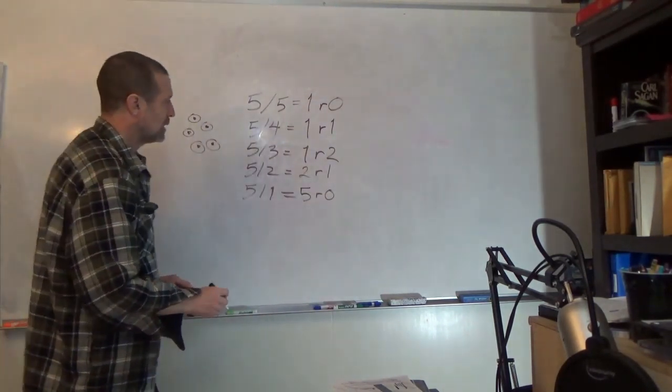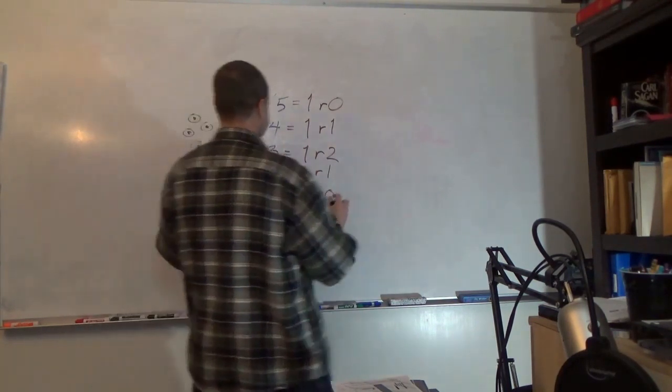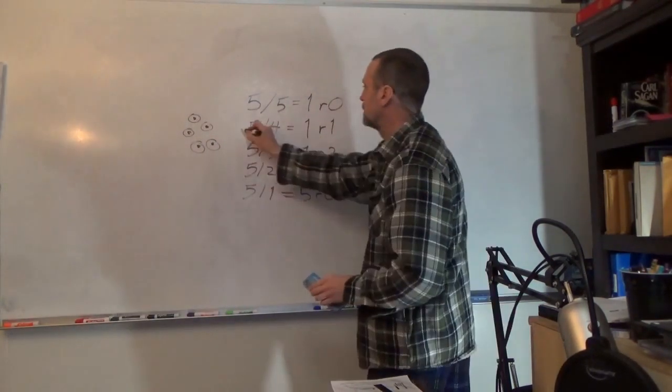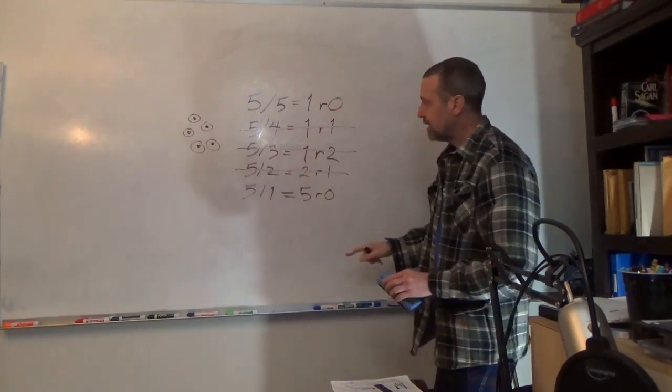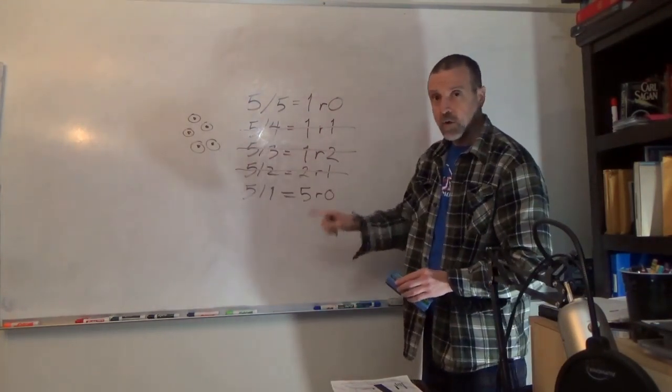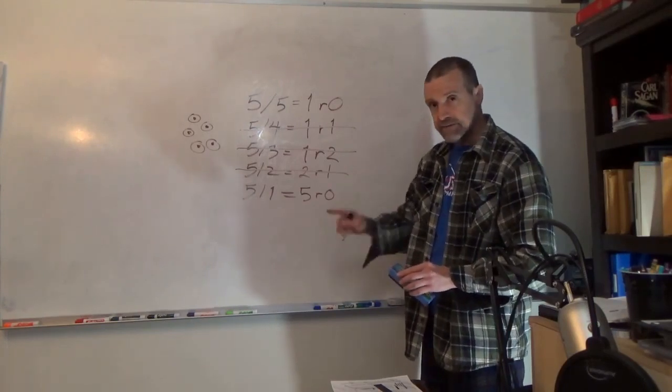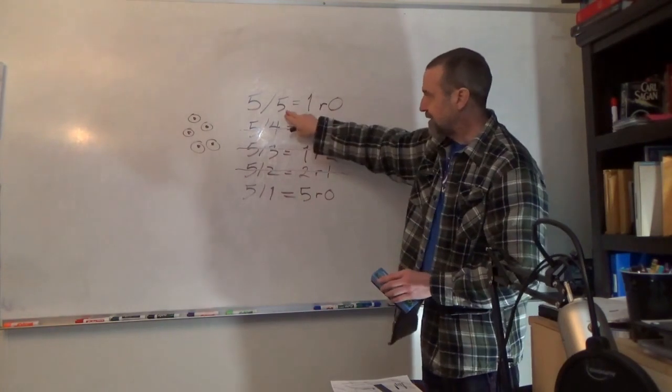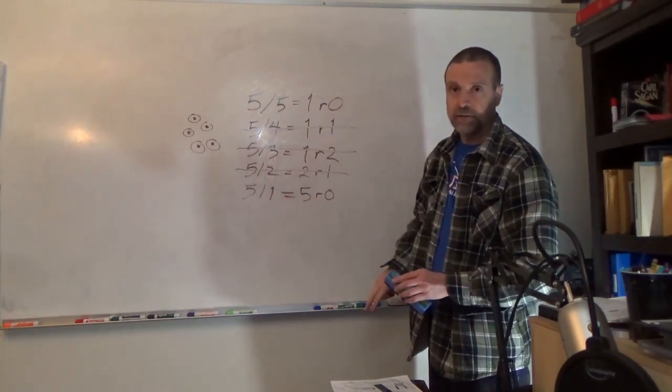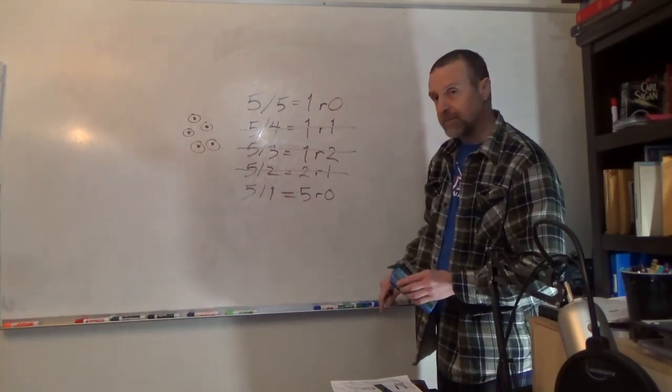So they have remainders here, and here, and here, which means that the number 5 can only be divided evenly—by evenly, I mean without remainder—by itself and by the number 1. Therefore, 5 is a prime number.